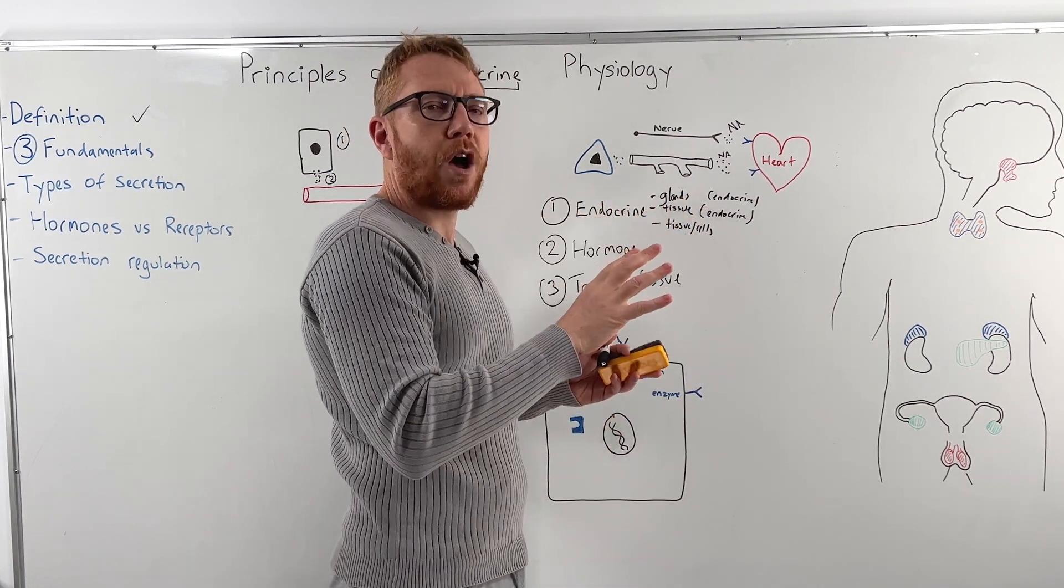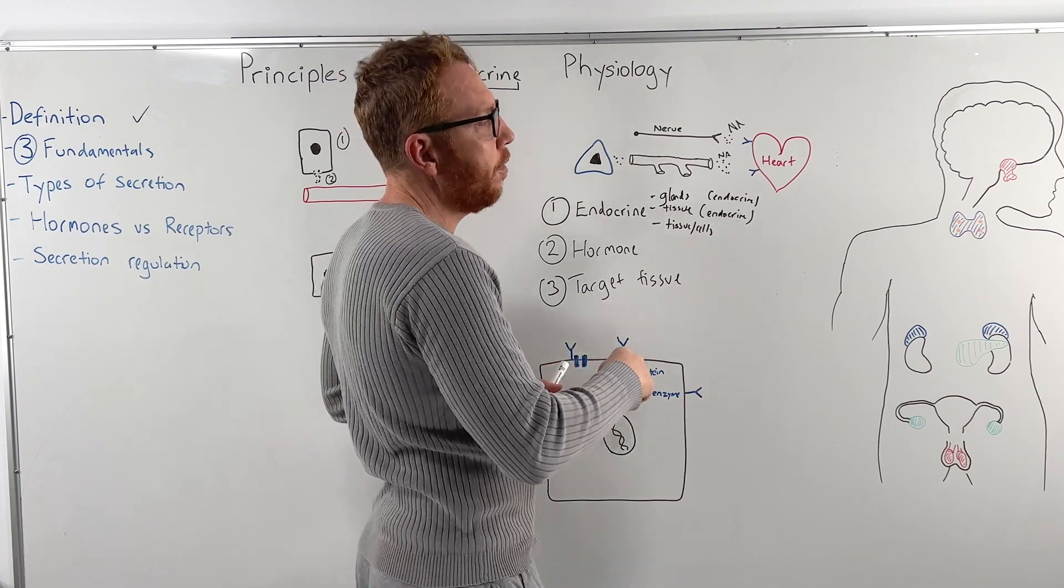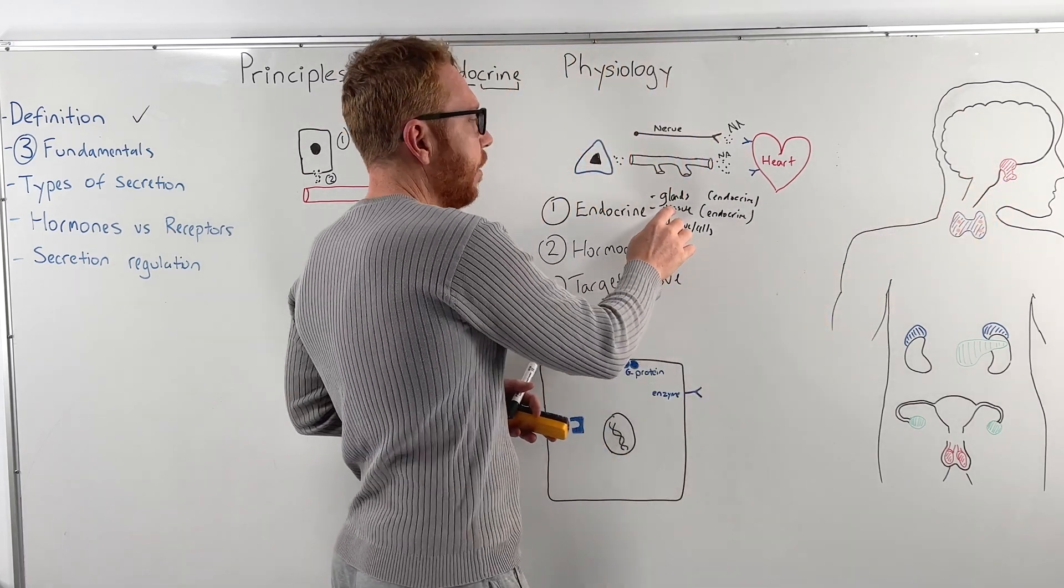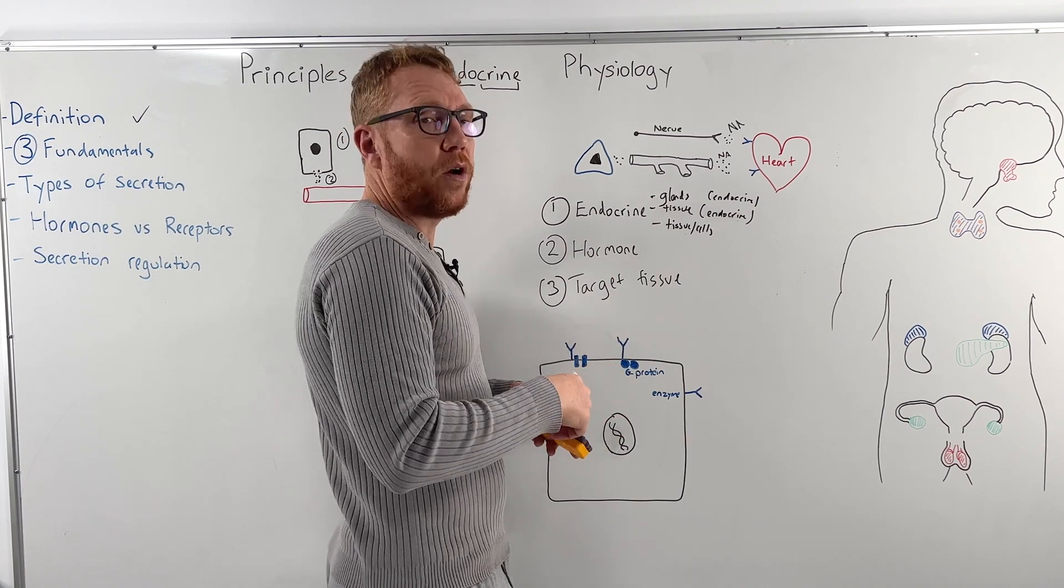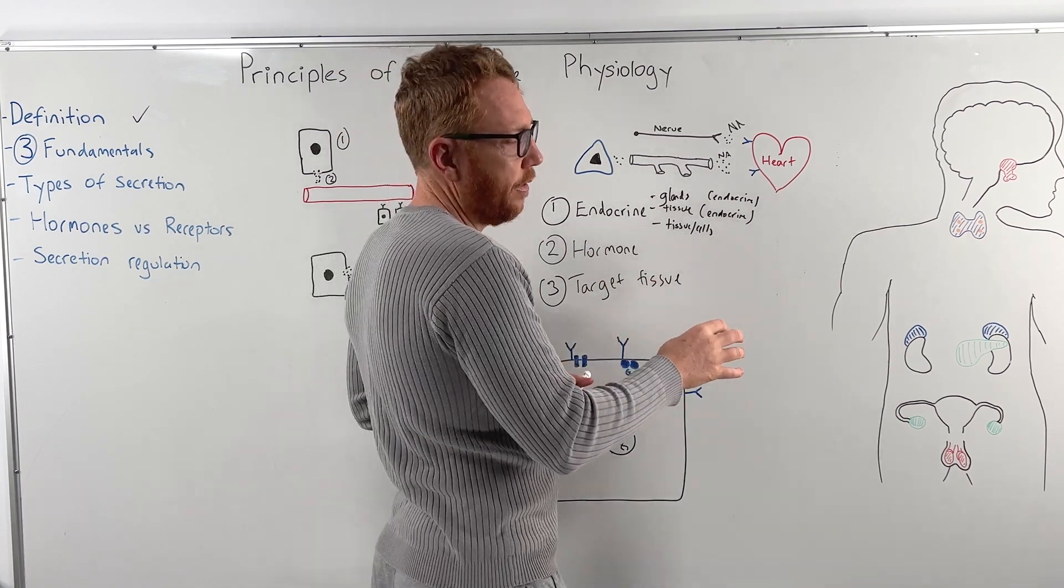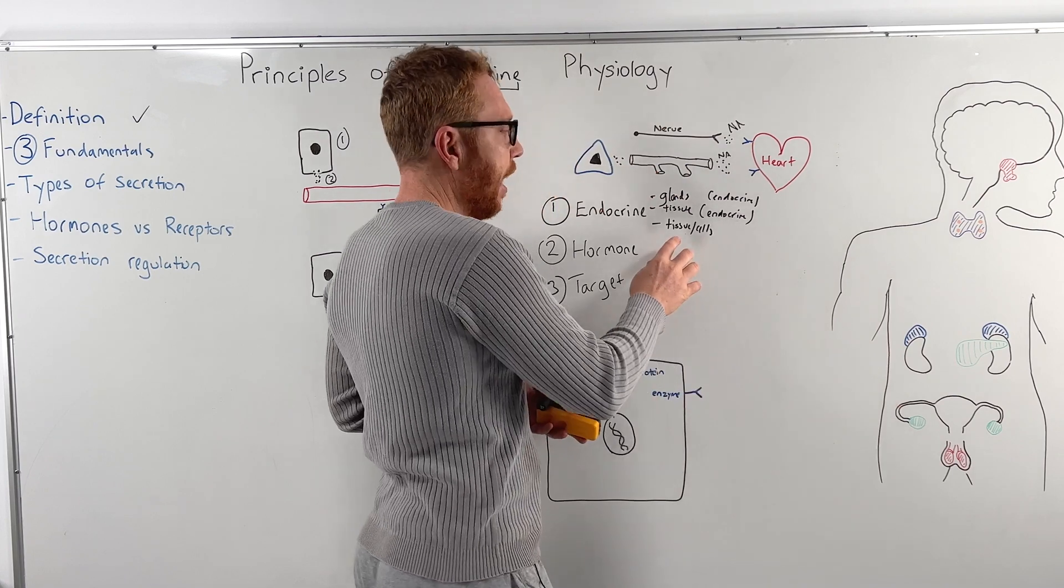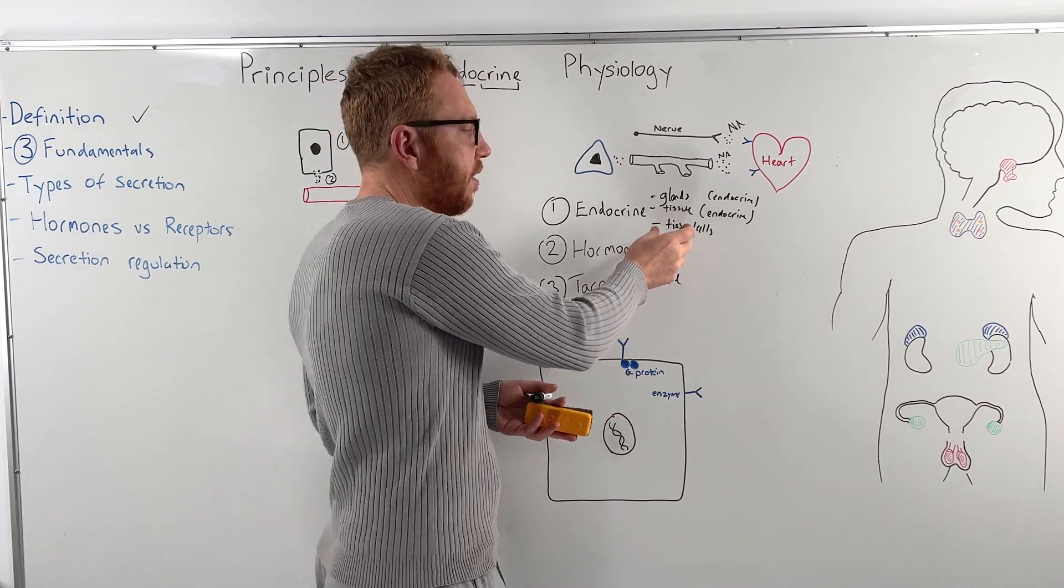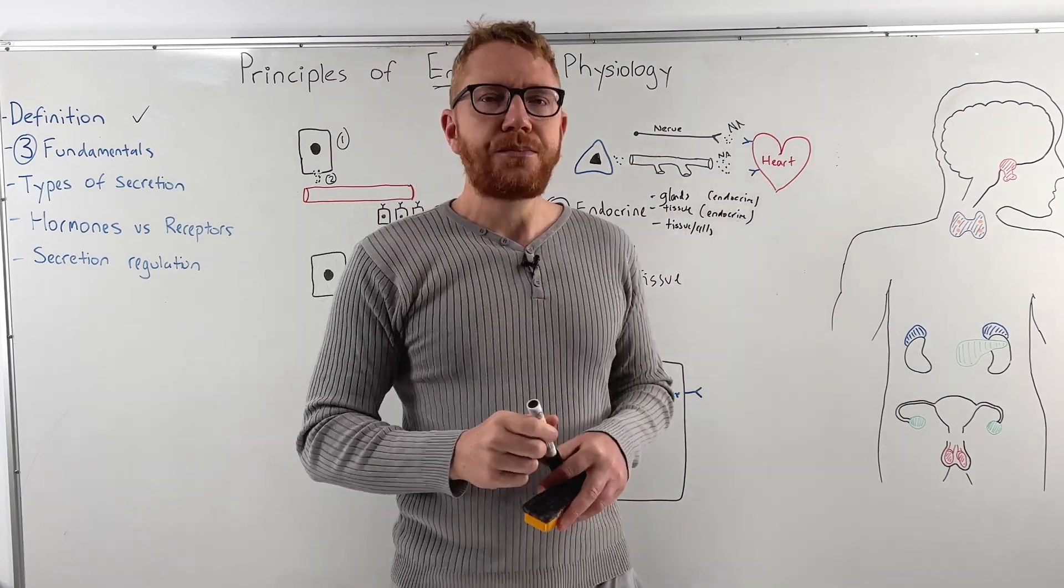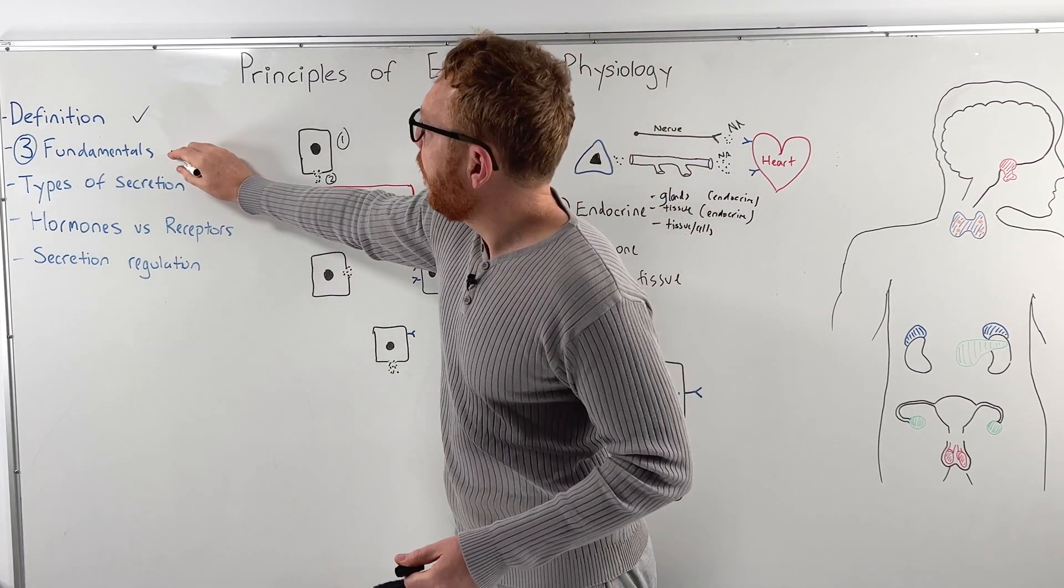So there's the distinction between the three. Glands, primarily, all it does is secrete hormones. An example is pituitary gland. Tissue, endocrine tissue, where it will secrete hormones regularly, but it's not necessarily its primary function, such as the pancreas. And then tissue or cells that do other things mostly, but can, to some degree, release some hormones. So that's the three fundamentals done.